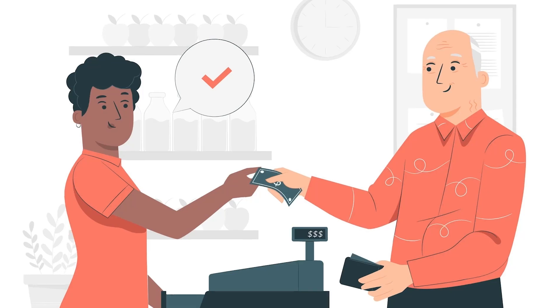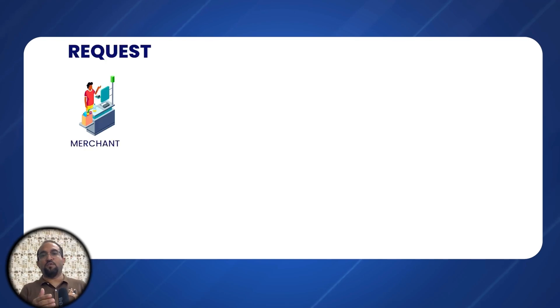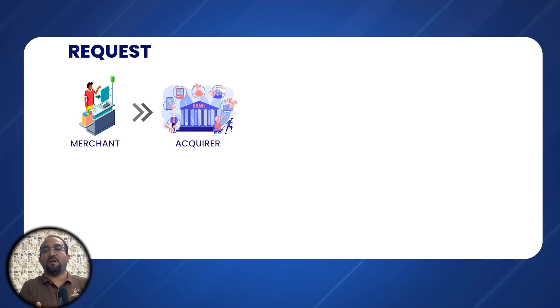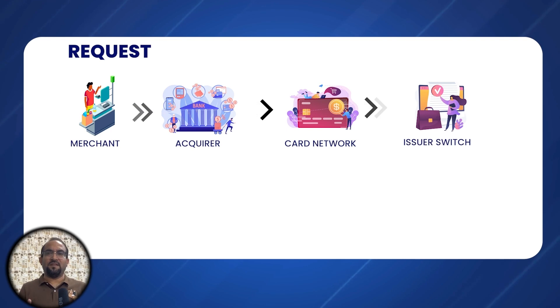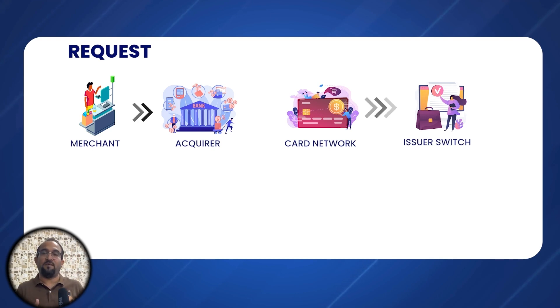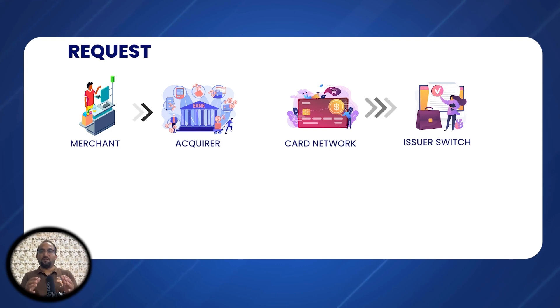I want to take a transaction scenario and imagine that a transaction is initiated by someone from a physical terminal, online website, or any mobile application. The transaction finally hits the issuing system — it goes through merchant, acquiring, and card network before ultimately reaching the issuing switch. That's a normal transaction flow we have covered in multiple videos. When the issuing transaction switch receives the transaction, let's understand both scenarios one by one.